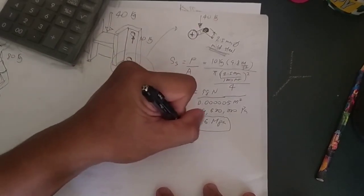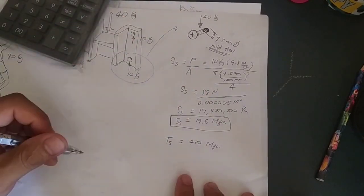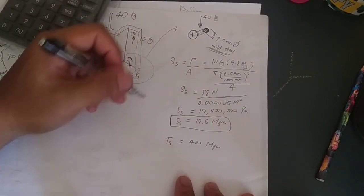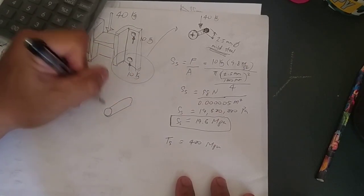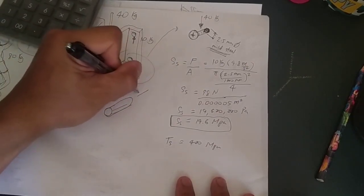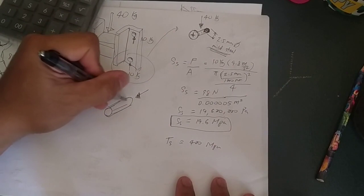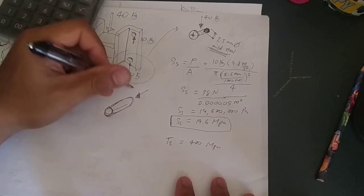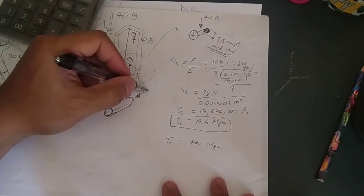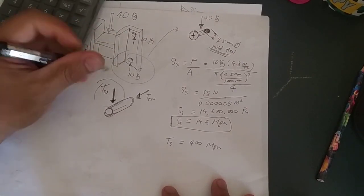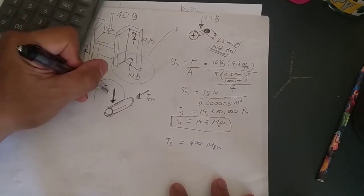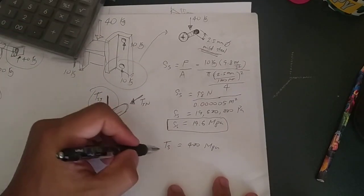So I know that for mild steel, the tensile strength is around 400 megapascal. Okay, but 400 megapascal is based on normal tensile strength, meaning that the force is applied like that if this is your round bar. But our force is not normal, it is shear. So I know that to get the tensile strength in shear, we just simply multiply the normal strength with a factor of 0.6.